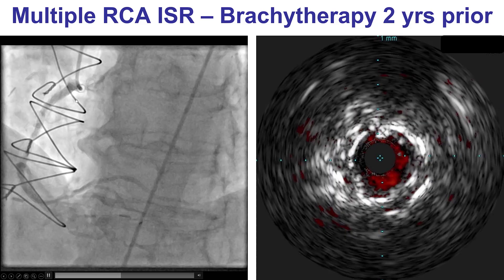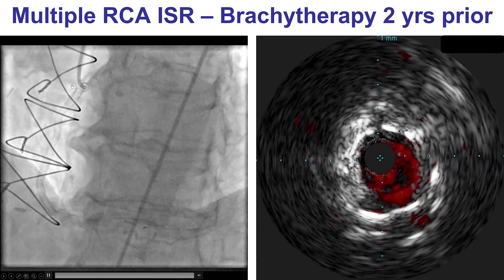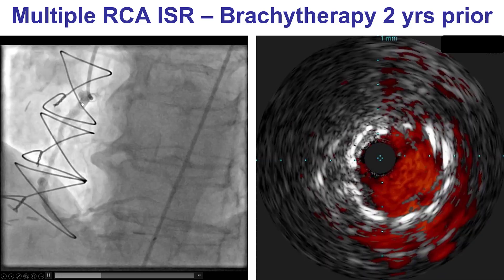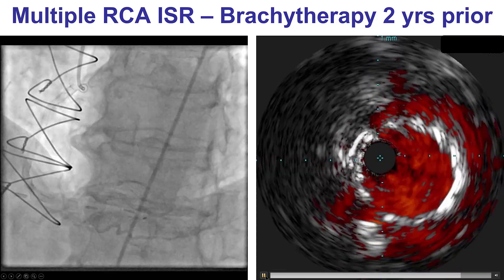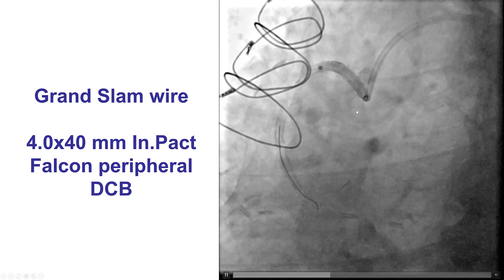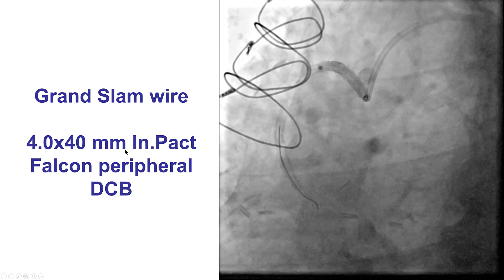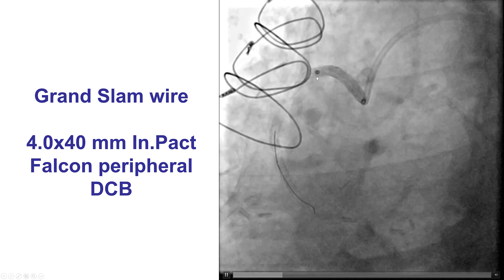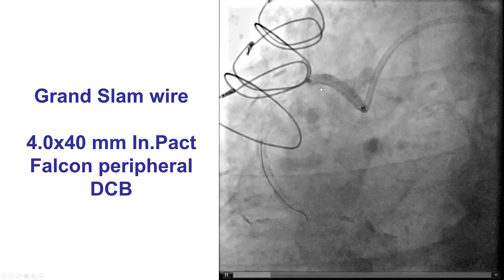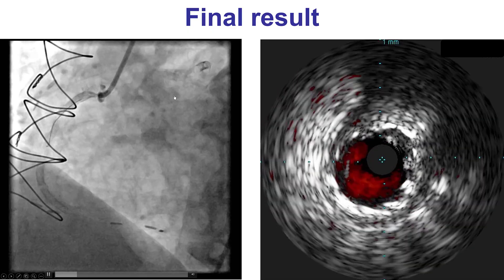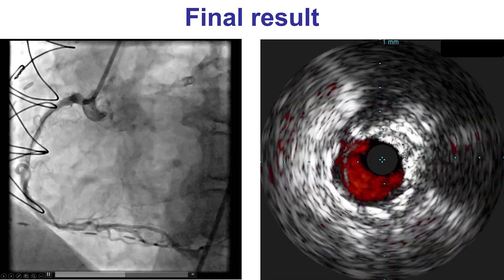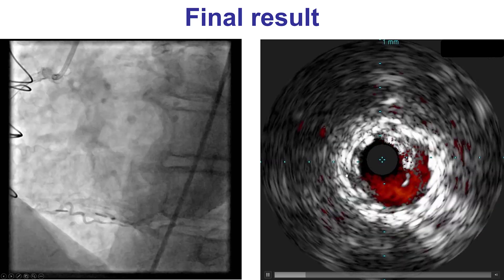This is an example of a patient who had recurrent restenosis of the proximal RCA with multiple layers of stent and underwent brachytherapy with off-label use of a peripheral Impact Falcon balloon. These balloons are extremely bulky — these are 0.035 balloons, very hard to deliver — and you can see it could barely be delivered in the proximal RCA. However, it was successful, and the patient did well without recurrent restenosis for two years.